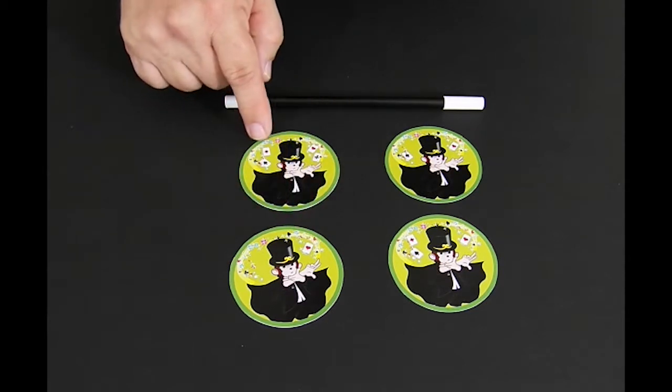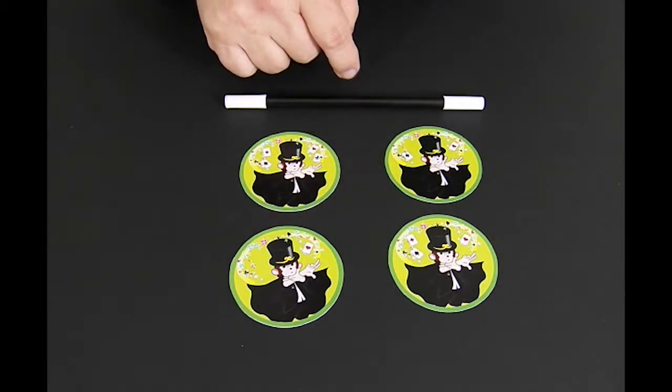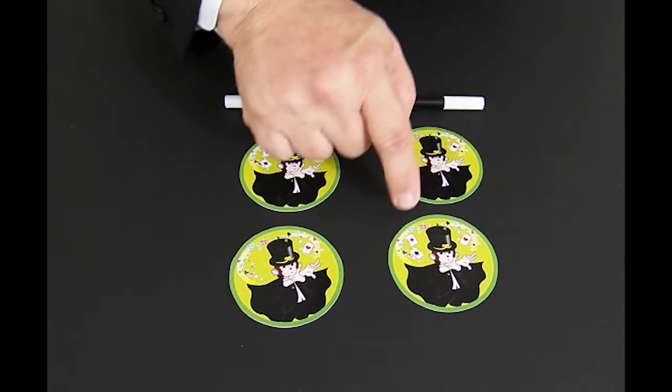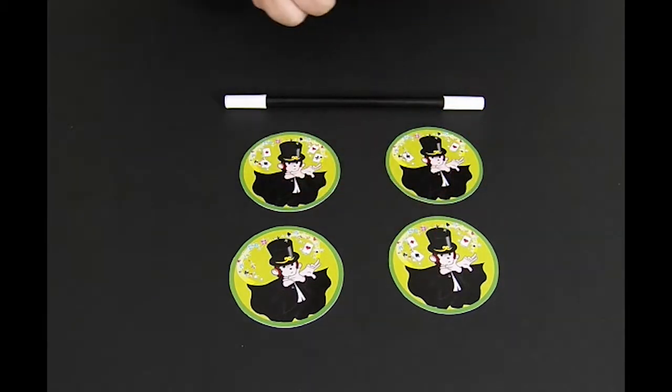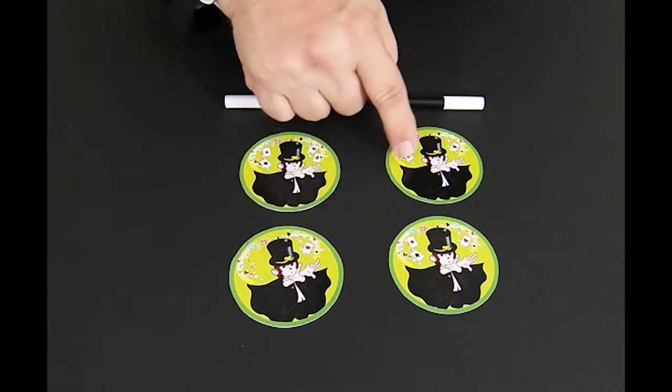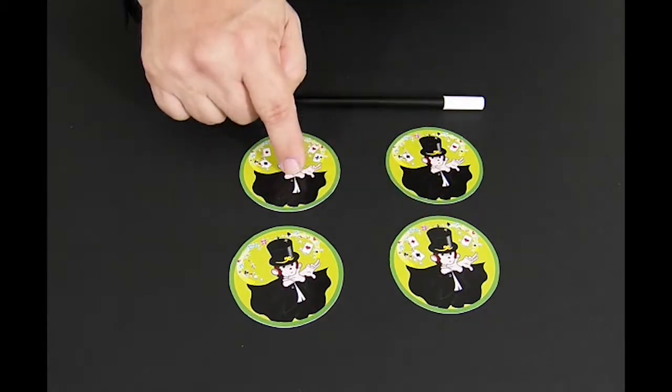One ace, one, two, three, four aces, one, two aces, one, two, three aces. Each of these cards represents one, two, three, four.